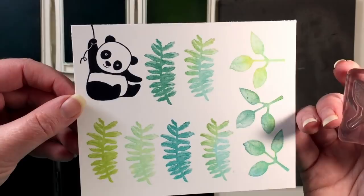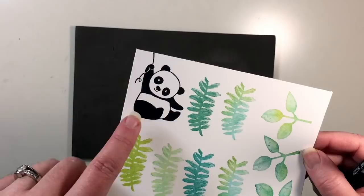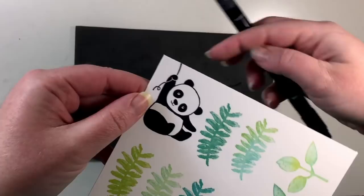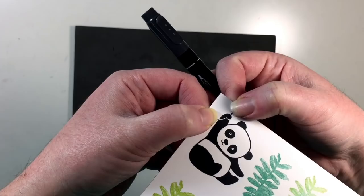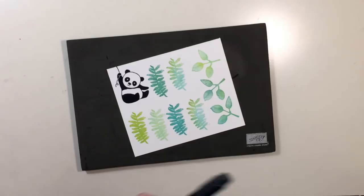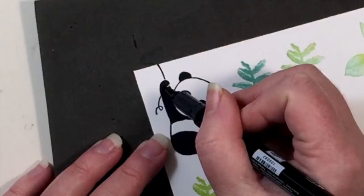When I fussy cut my panda, I'm going to be cutting out the balloon string. I don't want that to show. And when I do that, there will be a white space on his little paw there. So to cover that up, I'm just going to take my Stampin' Write marker in basic black and I'm just going to color in that line. And once it dries, you won't even be able to tell it's there.